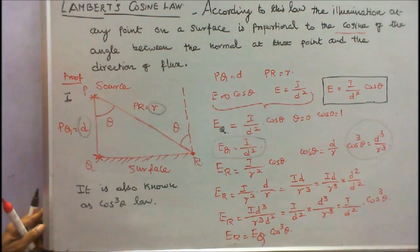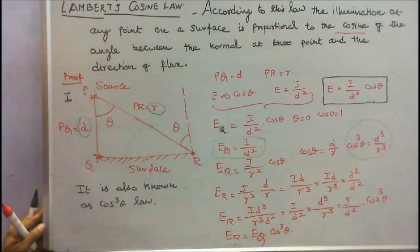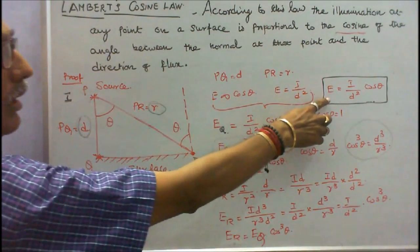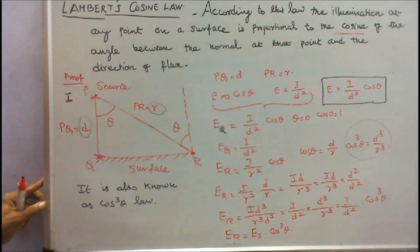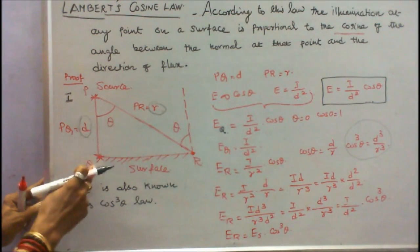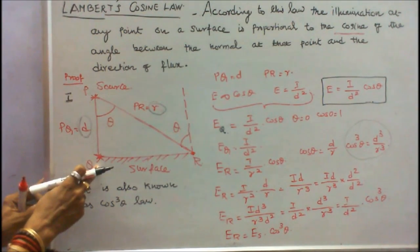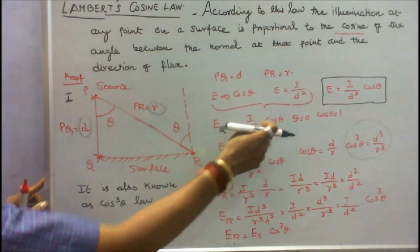Here illumination E is directly proportional to cos theta. And we know that E illumination is equal to luminous intensity divided by D square. It is a general formula. E is equal to I divided by D square into cos theta. I can write EQ is equal to I divided by D square into cos theta.